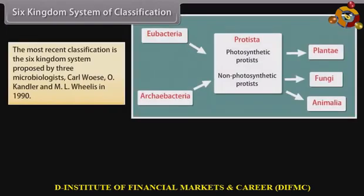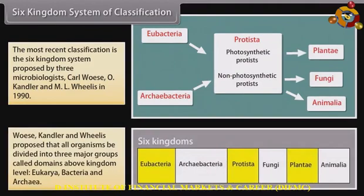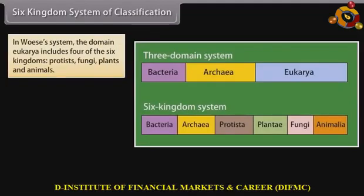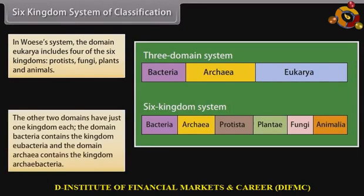Six Kingdom System of Classification: The most recent classification is the Six Kingdom System proposed by three microbiologists — Carl Woese, O. Kandler, and Emil Wolfe in 1990. They proposed that all organisms be divided into three major groups called domains above kingdom level: Eukarya, Bacteria, and Archaea. The domain Eukarya includes four of the six kingdoms: Protists, Fungi, Plants, and Animals. The other two domains have just one kingdom each — the domain Bacteria contains Kingdom Eubacteria, and the domain Archaea contains Kingdom Archaeabacteria.